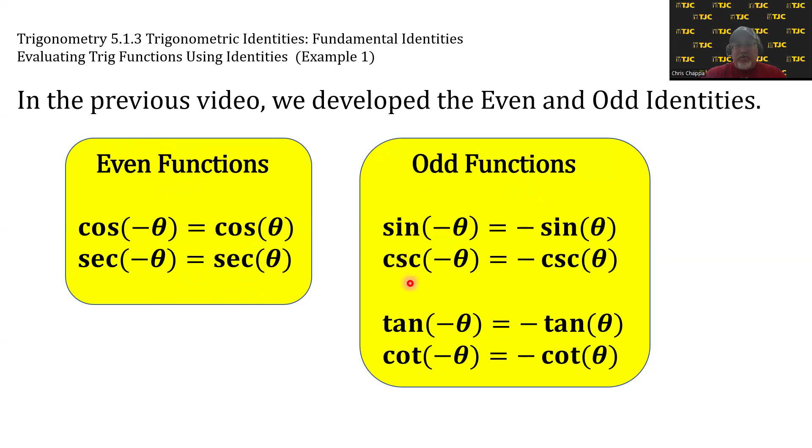The odd functions were sine, cosecant, tangent, and cotangent. For example, sine of negative theta equals negative sine of theta. What all four of these statements say is opposite inputs yield opposite outputs.